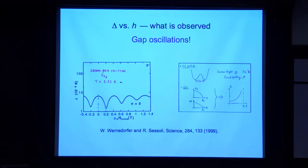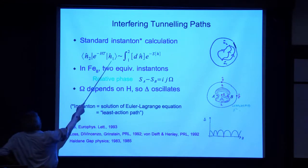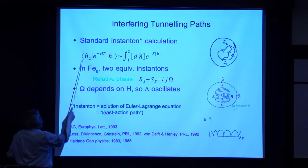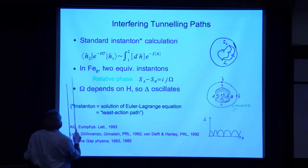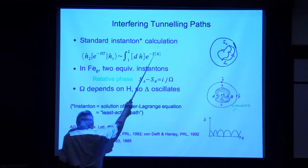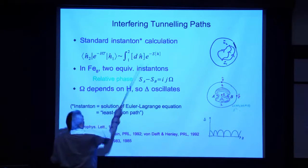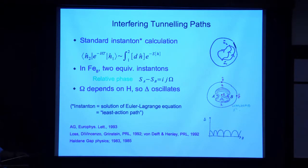I'll tell you how it's two-slit interference. The way to calculate tunnel splittings — one of the ways — is what's called an instanton calculation. I want to find the quantum mechanical amplitude to go from some initial direction in which the spin points to some final direction. A hat denotes a unit vector, not an operator. The path integral prescription for calculating such amplitudes is well-known: we find the action for a path and sum over all paths. We focus on the least action parts — the solutions of the Euler-Lagrange equation — called instantons.